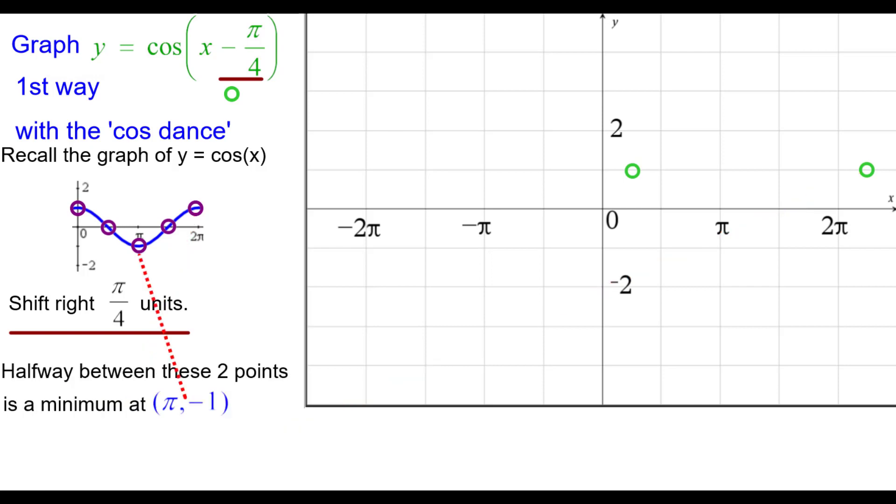Halfway between those is a minimum at (pi, negative 1), but again we are shifting that pi another pi over 4, so that will be at (5 pi over 4, negative 1).